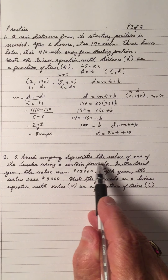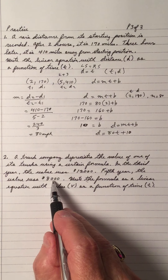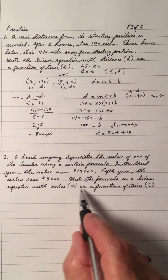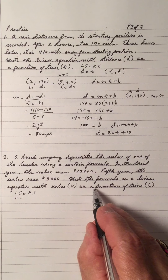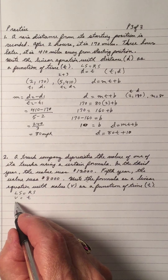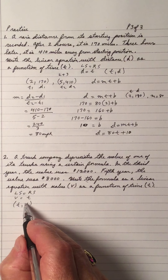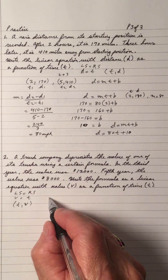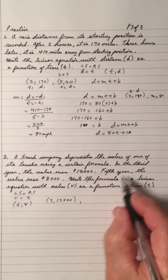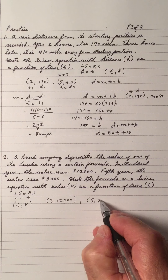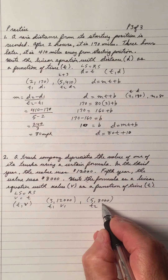Number 2. A truck company depreciates the value of one of its trucks using a certain formula. In the third year, the value was $12,000. In the fifth year, the value was $8,000. Write a formula for the linear equation with the value as a function of t. We have left side and right side — value as a function of t. So the ordered pairs are t and v: (3, 12000) and (5, 8000). This is t1, v1, and t2, v2.